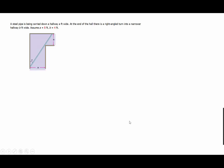A steel pipe is being carried down a hallway A feet wide. At the end of the hall, there is a right-angled turn into a narrower hallway B feet wide. Assume A is equal to 8 feet and B is equal to 4 feet.